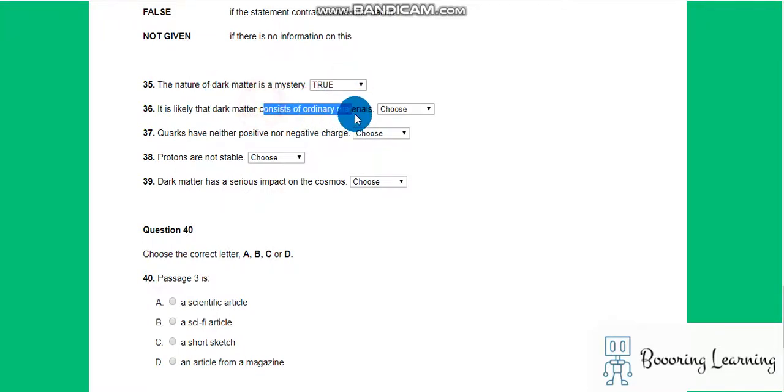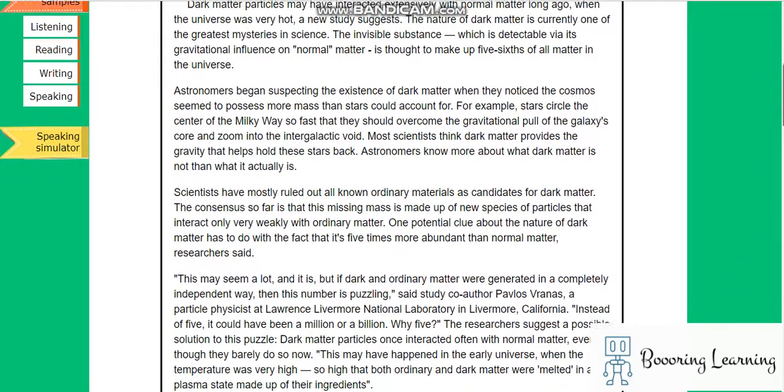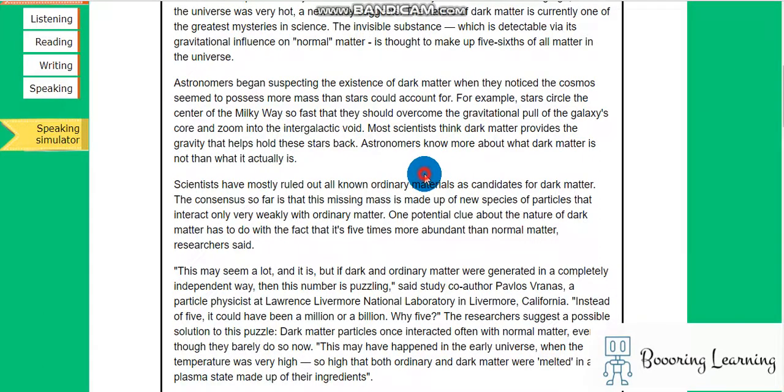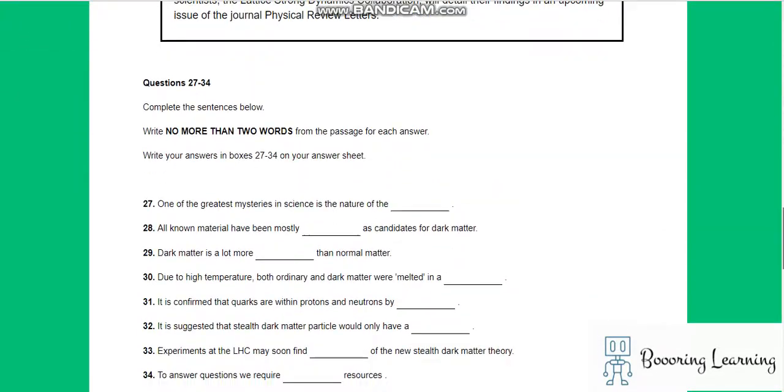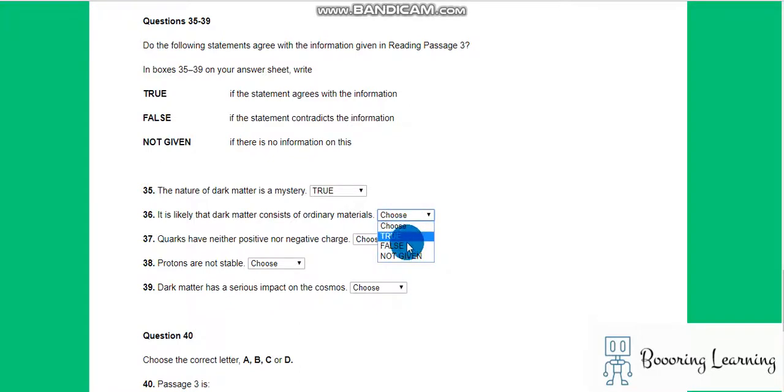Question 36: It is likely that dark matter consists of ordinary materials. Scientists have mostly ruled out all known ordinary materials as candidates for dark matter. The consensus is that missing—so they ruled out. So it means it is false.